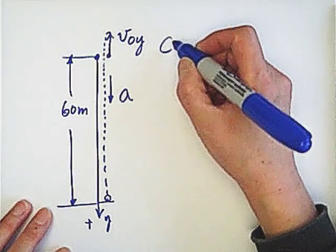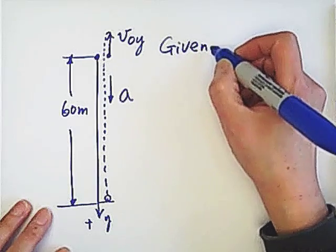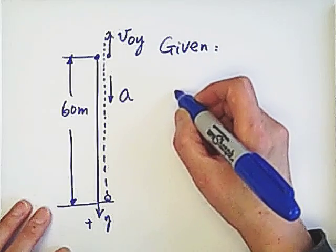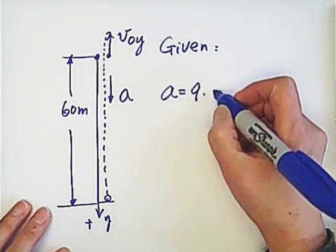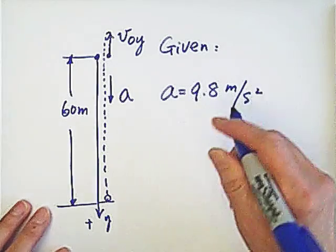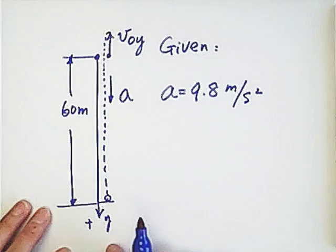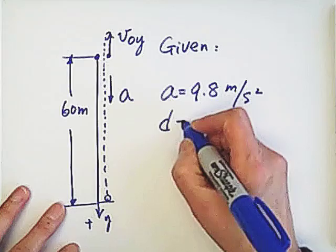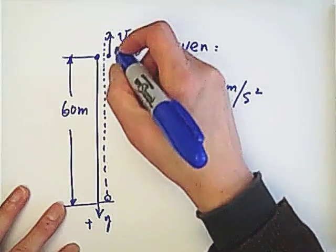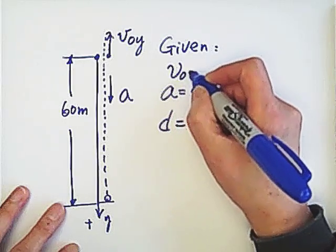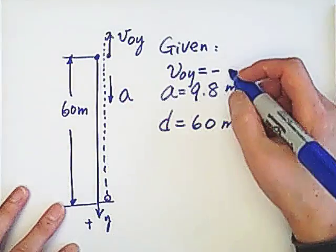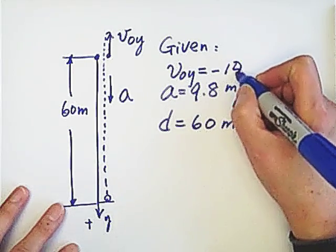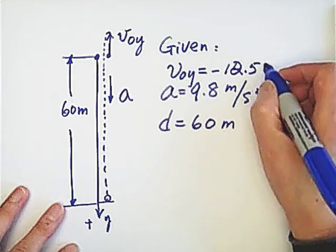So we write the given information. The acceleration is downward, so we write acceleration equals 9.8 meters per second squared — positive because downward is positive. The displacement is also positive, which is 60 meters. But the initial velocity is negative because it is upward, so V₀ equals negative 12.5 meters per second.